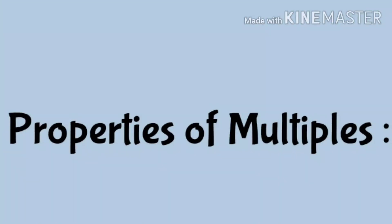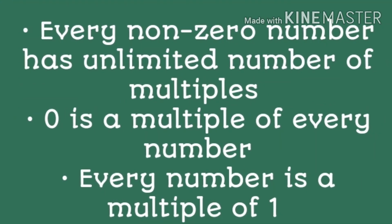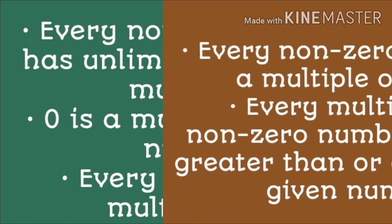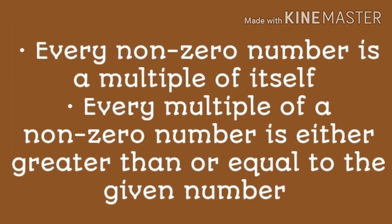We also studied the properties of multiples. First, every non-zero number has an unlimited number of multiples. Second, zero is a multiple of every number. Third, every number is a multiple of one. Fourth, every non-zero number is a multiple of itself. And the last property: every multiple of a non-zero number is either greater than or equal to the given number.